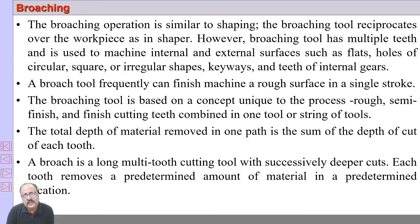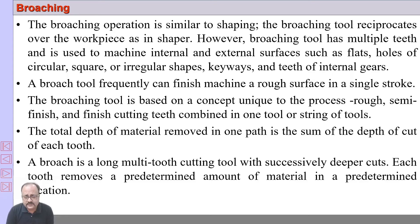Broaching can produce flat surfaces. It can produce holes of different cross sections — not only circular, but square, triangular, rectangular, hexagonal, and star-shaped cross-section holes. It can machine external surfaces as well as internal surfaces. It can produce keyways and the teeth of internal gears.